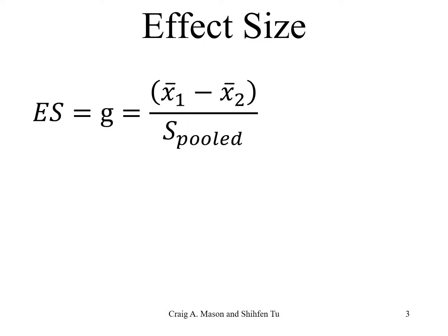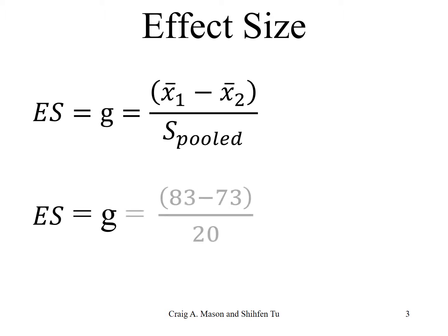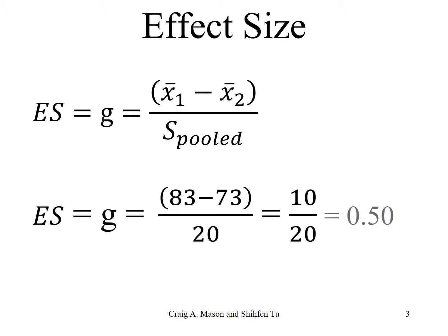Our effect size is equal to x-bar 1 minus x-bar 2 divided by the pooled standard deviation. That works out to be our effect size — technically Hedges' g — equal to 83 minus 73 divided by 20, or 10 divided by 20, or 0.50.